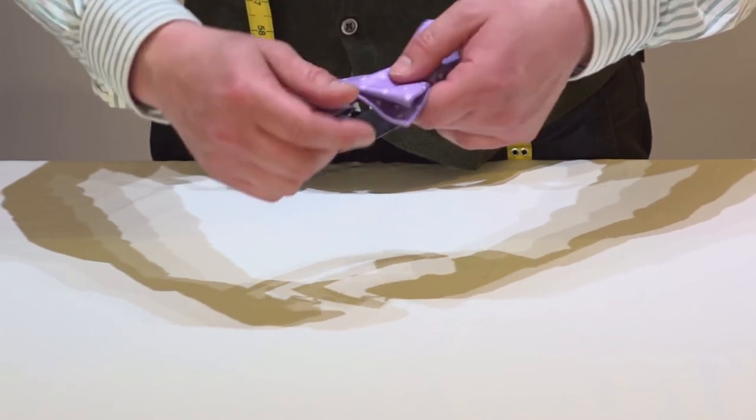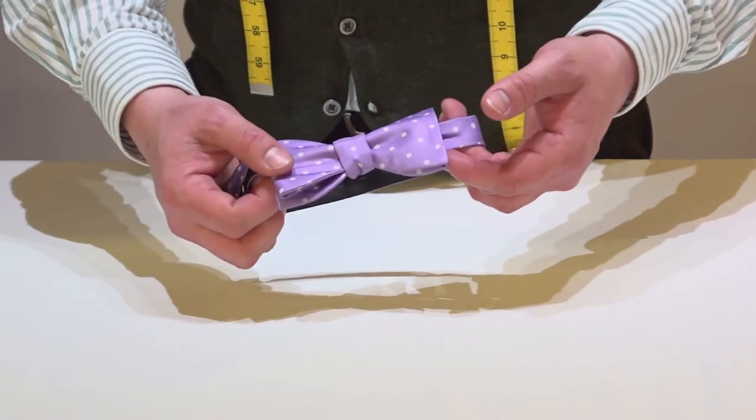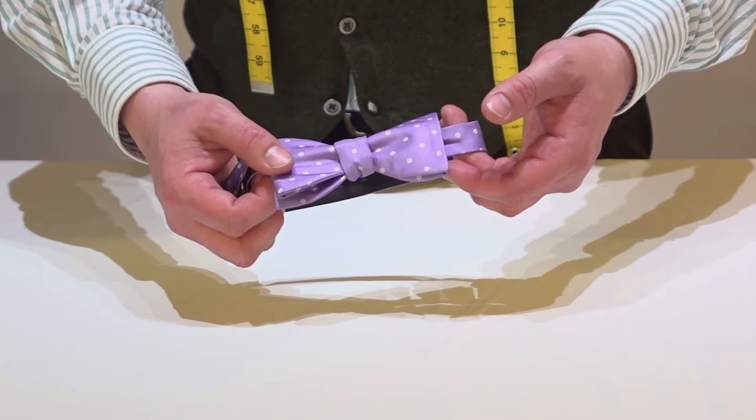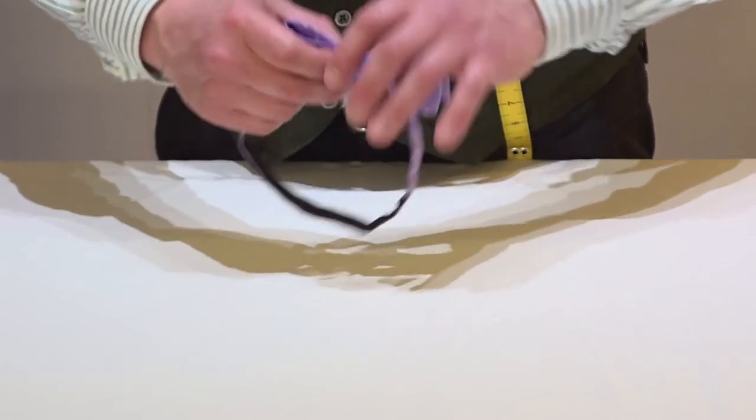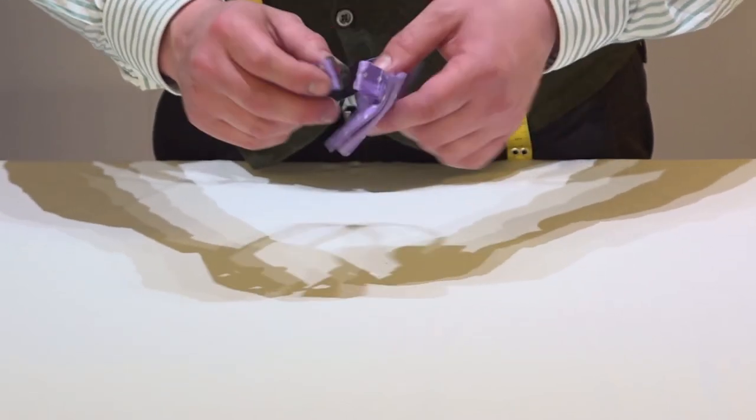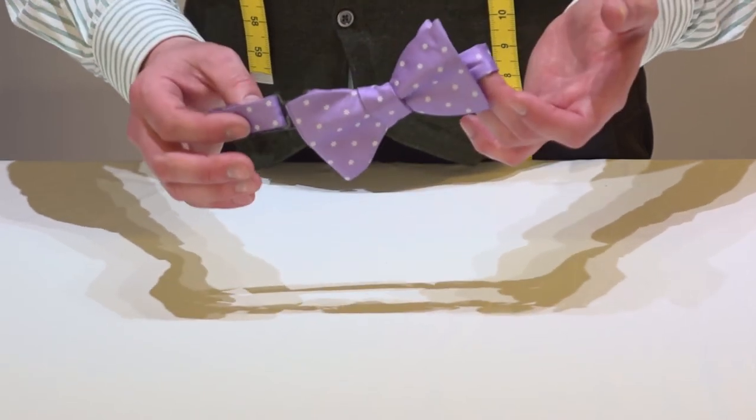This is especially useful when wearing a wing collar, when the full neckband is on display. So I now have the appearance of a self tie, with the simplicity of a ready tied.